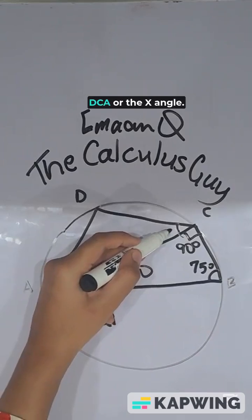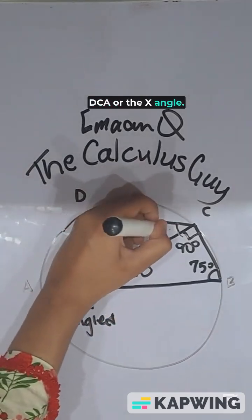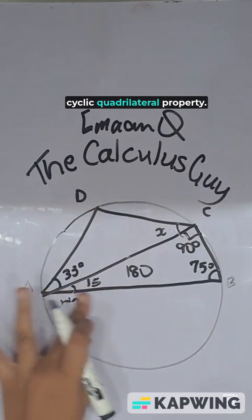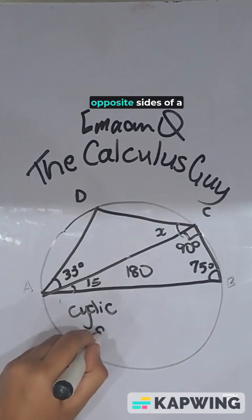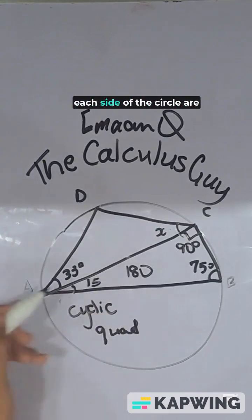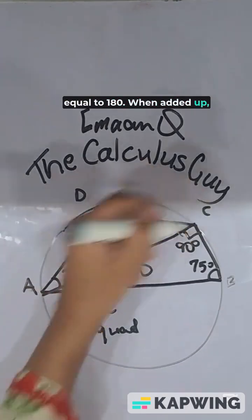Next, we need to find DCA or the X angle. This can be found using the cyclic quadrilateral property. Cyclic quadrilateral property basically says that two opposite sides of a quadrilateral which touches on each side of the circle are equal to 180 when added up.